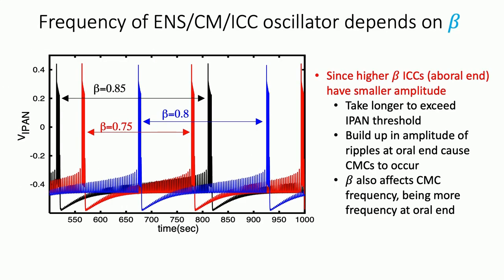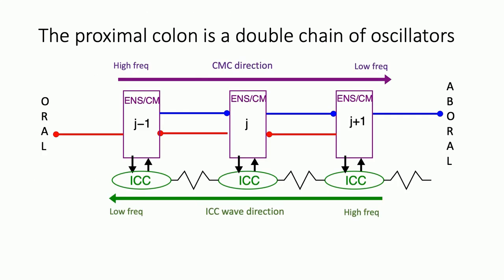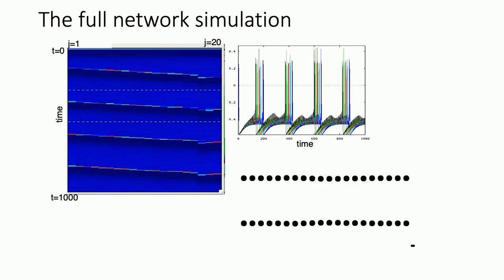There is more evidence of how beta affects the dynamics: the time between CMCs also depends on beta. It's not just the ICC dynamics — beta affects the overall system dynamics. With beta = 0.75, a smaller value, CMCs are more frequent. Increasing beta makes them less frequent. Putting this all together, we have effectively a double chain of oscillators: the ICC chain going from high frequency to low frequency aborally to orally, and a corresponding CMC frequency gradient driven by beta.